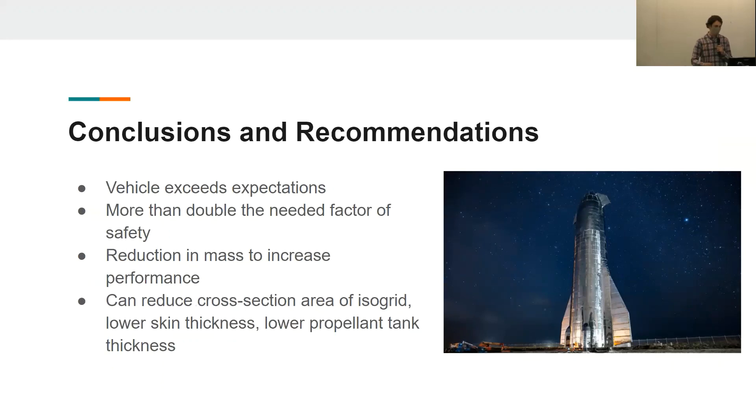In conclusion, this high factor of safety means that our vehicle actually exceeded design expectations. It is double the actual factor of safety needed, which is 1.5. One way to remedy this situation is to reduce the mass of some of the structures, and by doing this, it will increase the performance of our rocket and let it go farther. And in turn, maybe even carry some more payload mass.